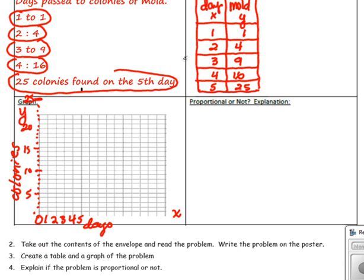And now we'll graph our ordered pairs. So our first ordered pair is one, one. So we go over one and up one. Our second ordered pair is two, four. We go over two and up four.